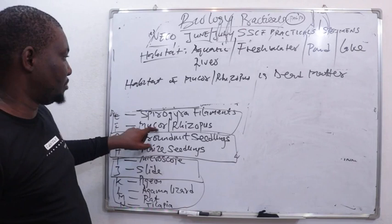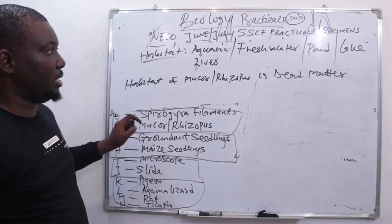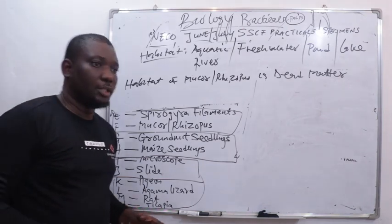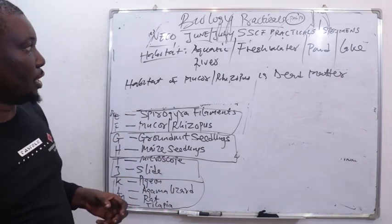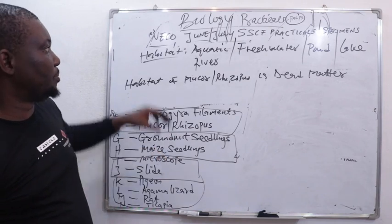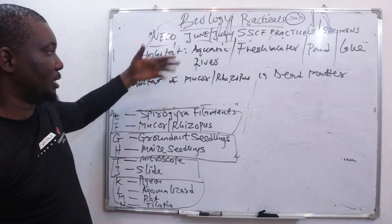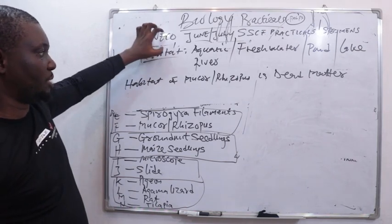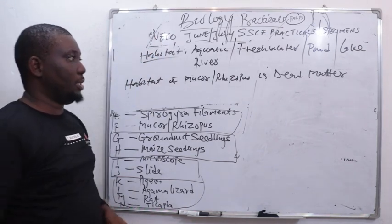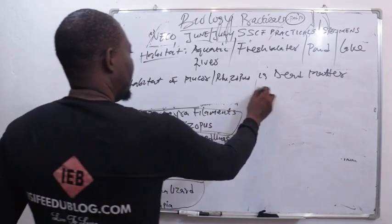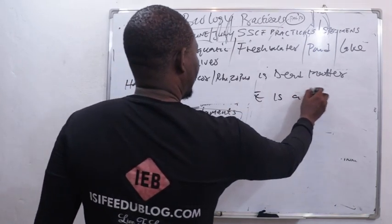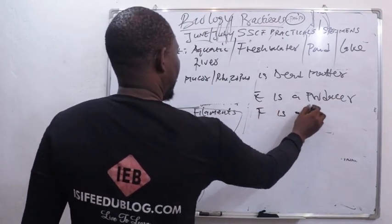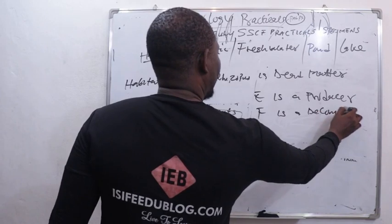That is why this particular specimen is saprophytic — it feeds off dead matter in terms of mode of nutrition. Specimen E is a producer — Spirogyra is a producer — while Specimen F, Rhizopus, is a decomposer. Please take note: E is a producer, F is a decomposer.